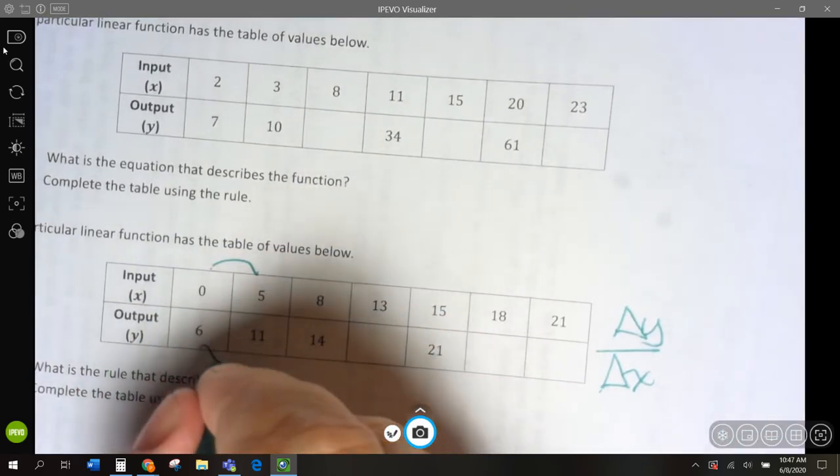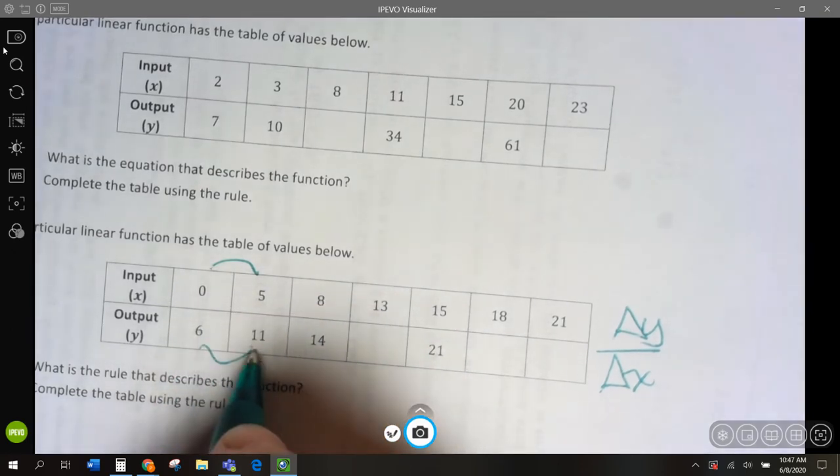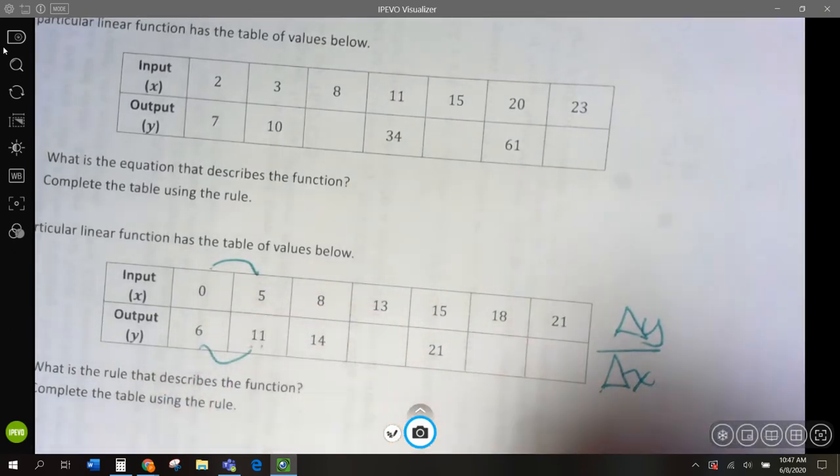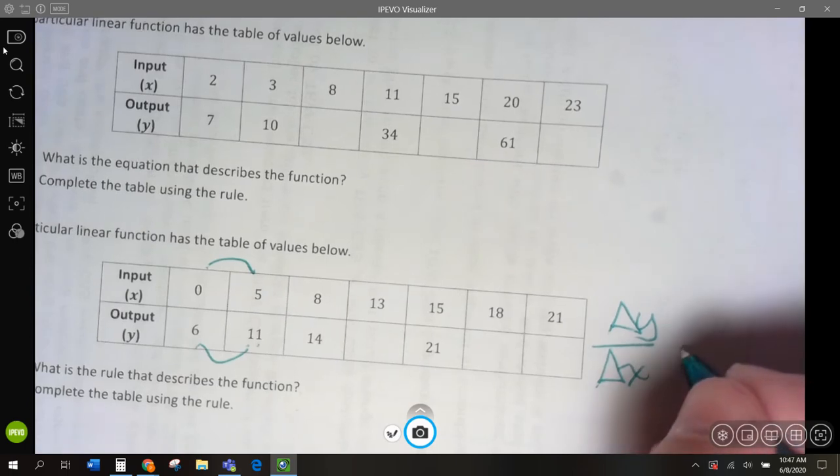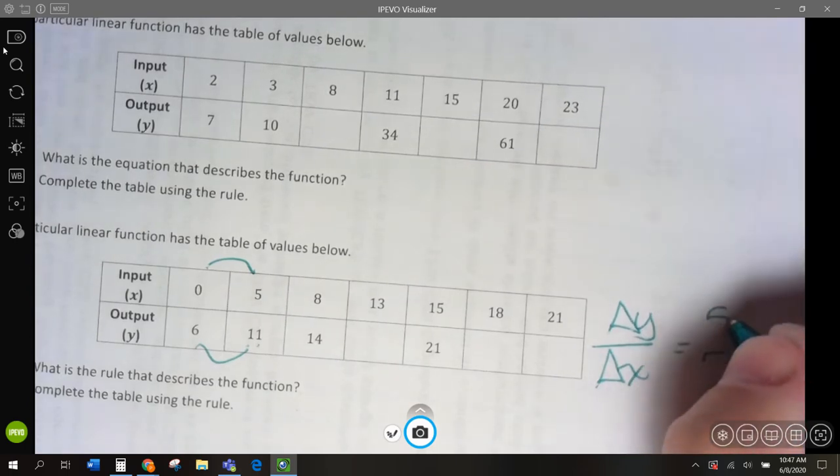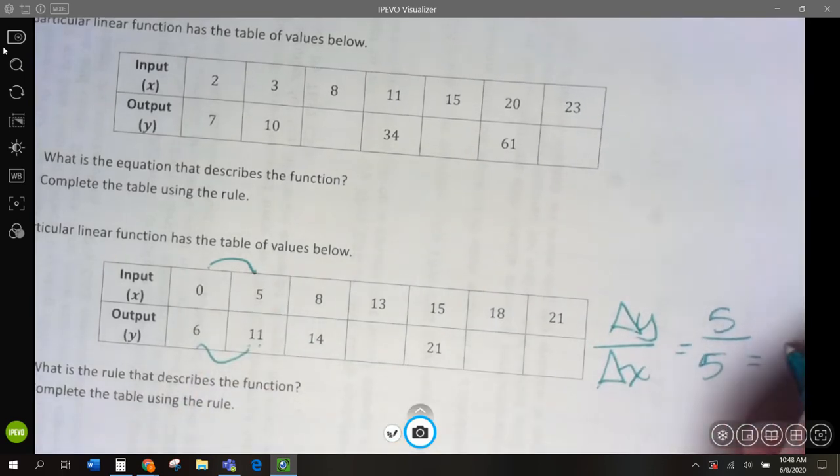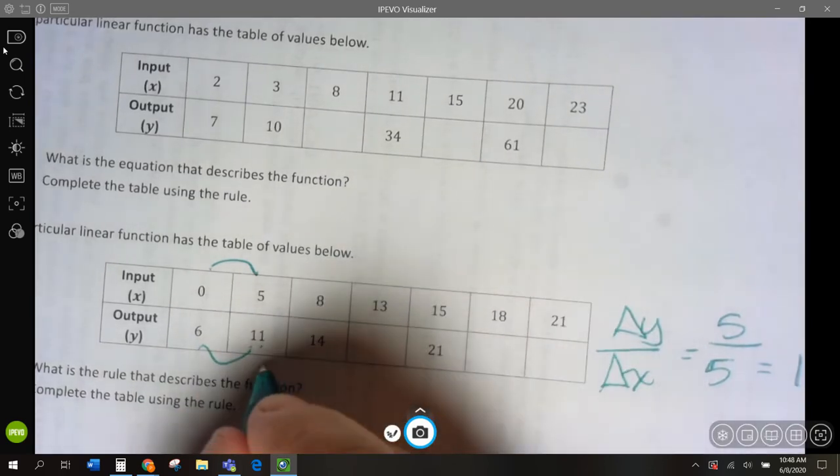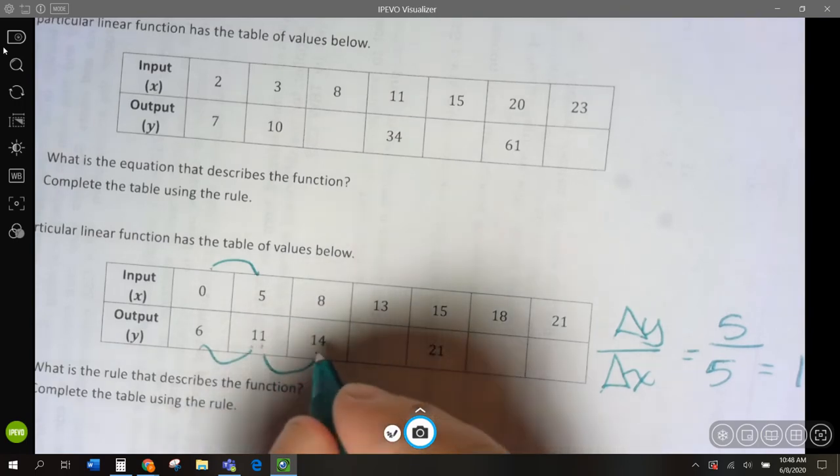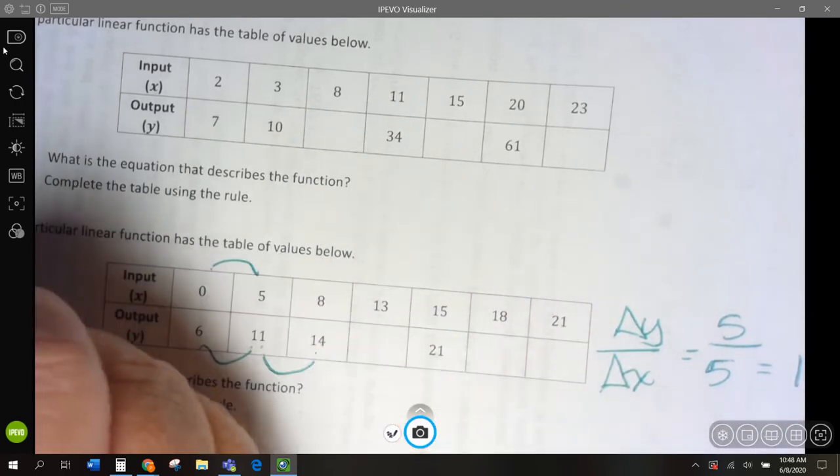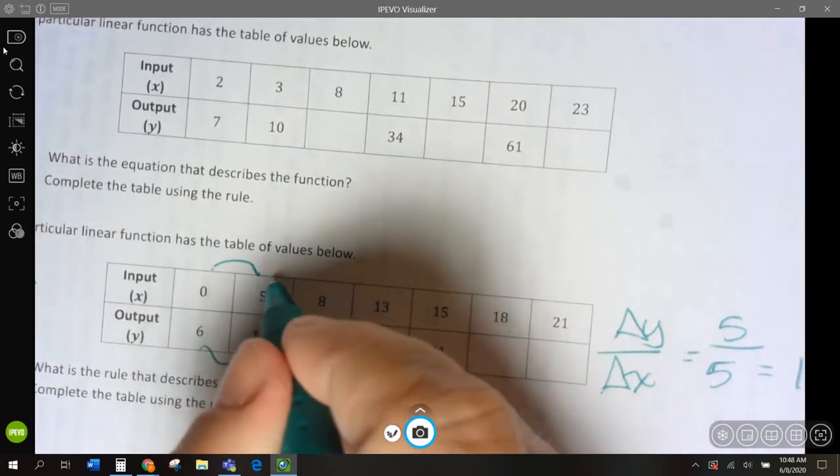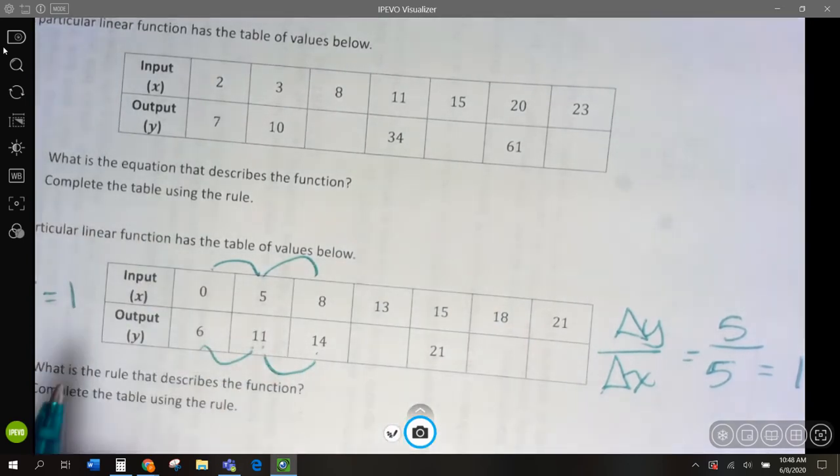From here to here, from 6 to 11, it goes up by 5. And from here to here, it goes up by 5. So, that's going to be 1. Let's try this one. 11 to 14, that goes up by 3. And 5 to 8, that goes up by 3. So, that's again 1.